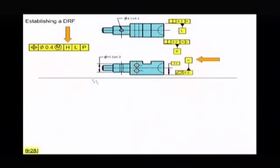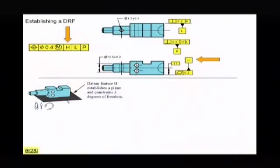So H, if I was to call off H first, here's our datum feature H. So what does H establish for you? H is going to establish a plane. So what I have is I have to establish a plane. Now, you know what that plane does. It's automatically going to stop one translation, going to stop up and down.